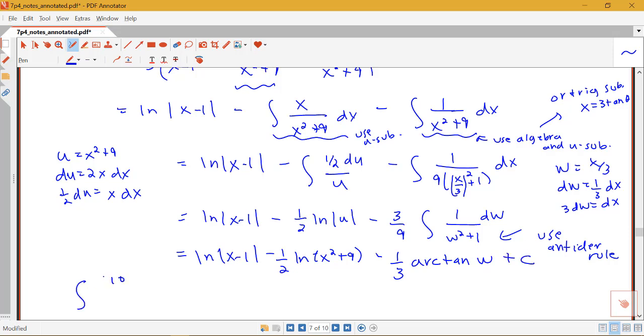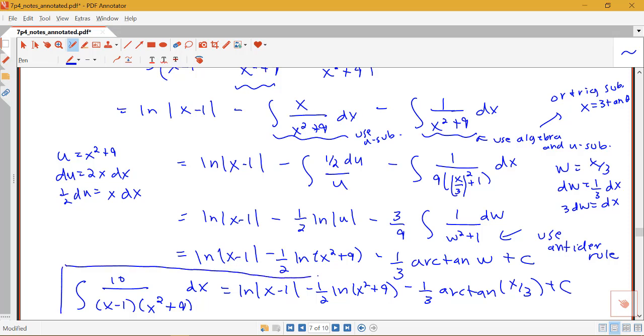Okay, and so in my final step here, I'll just put that all back in terms of x. Remembering that what I'm integrating here was 10/((x-1)(x²+9)). So we've got log|x-1| - (1/2)log(x²+9) - (1/3)arctan(x/3) + C. And so this here is our final answer.